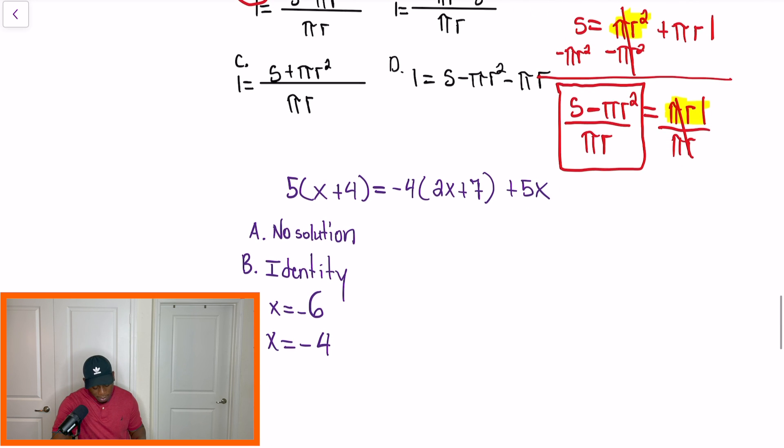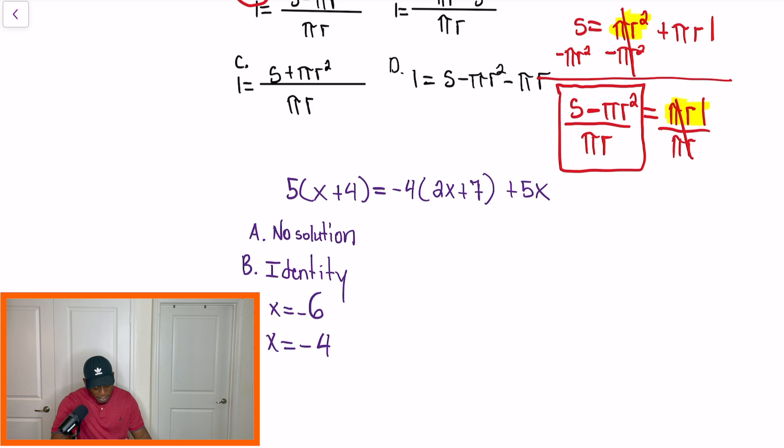All right. And this is what I mean. So imagine that L was X. We'd have to basically group all the terms together if we can, if there's like terms. So I'm going to show you guys what I mean. So in our last problem, I'm going to distribute. So once we distribute, we had 5X plus 20, and this is equal to negative 8X minus 28 plus 5X.